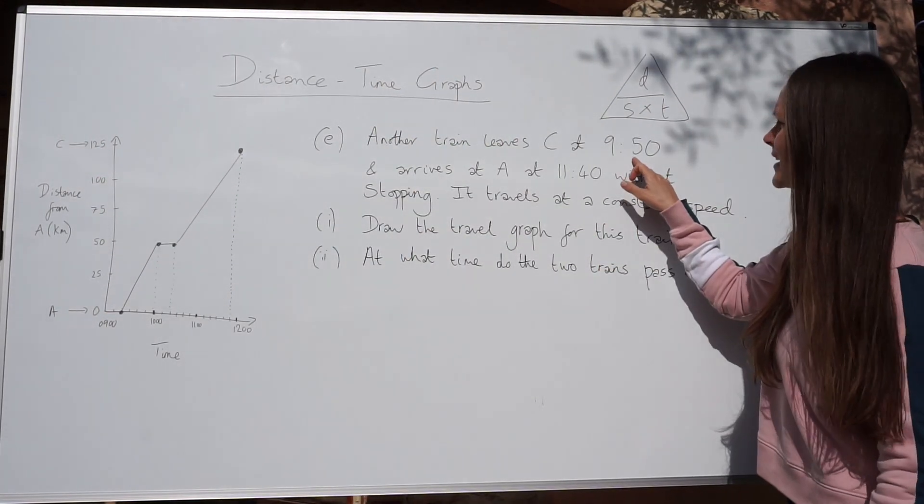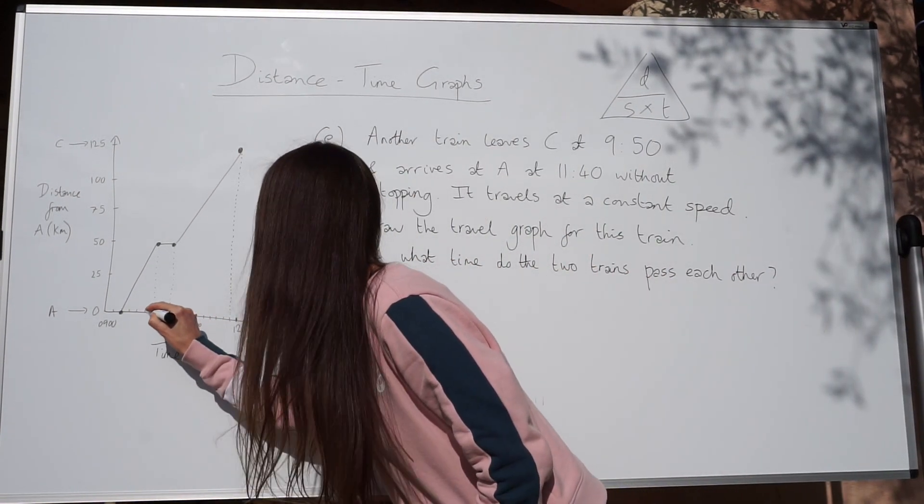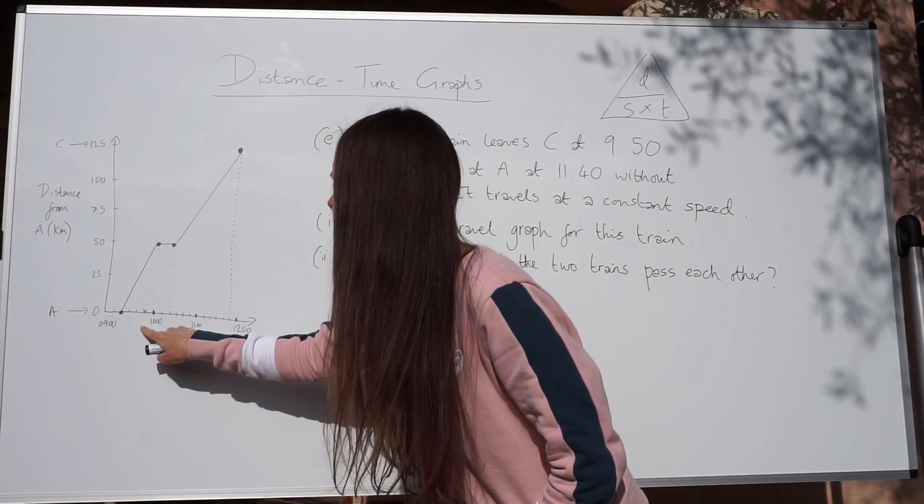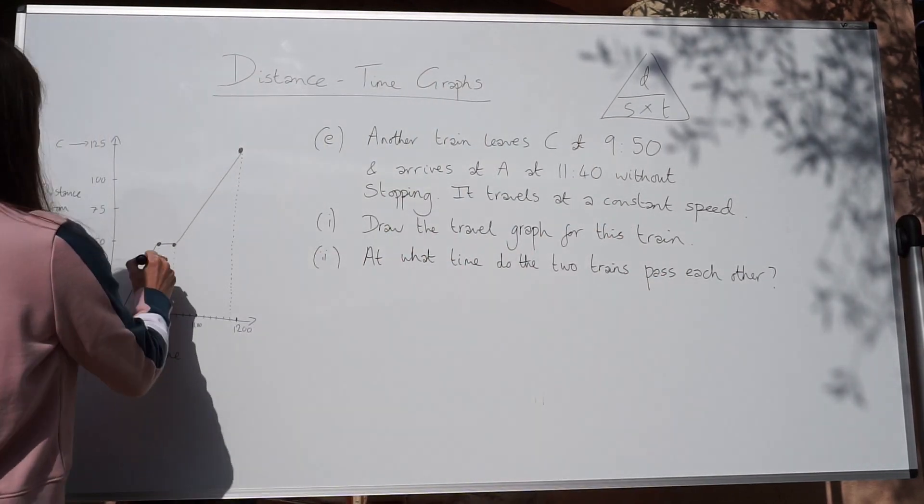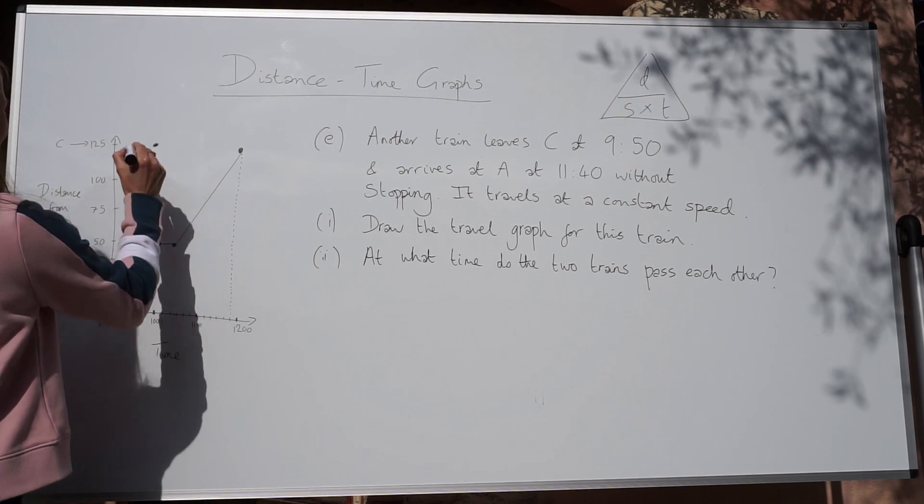So I'm going to mark 9.50 on my graph. So here's 9.50, 10 minutes before 10. So just one little square before 10 o'clock. And so that is where it leaves C.